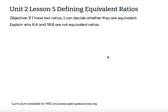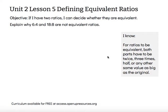Explain why 6 to 4 and 18 to 8 are not equivalent ratios. Well, I know for ratios to be equivalent, both parts have to be twice, 3 times, half, or any other same value as big as the original.